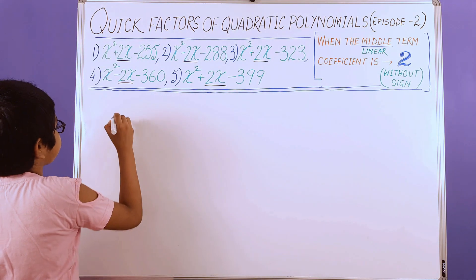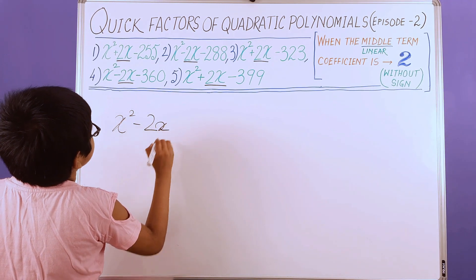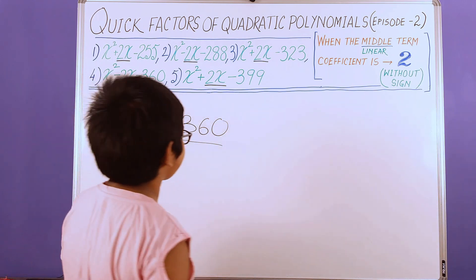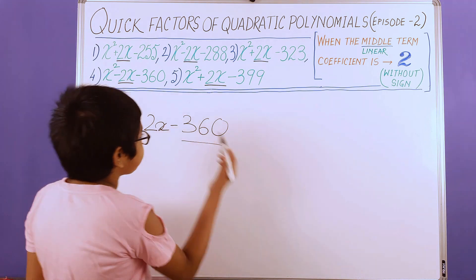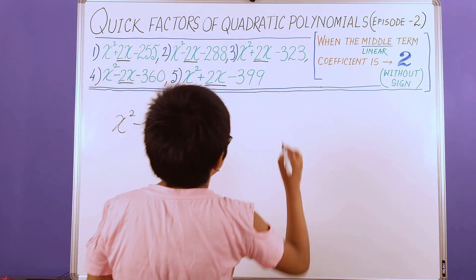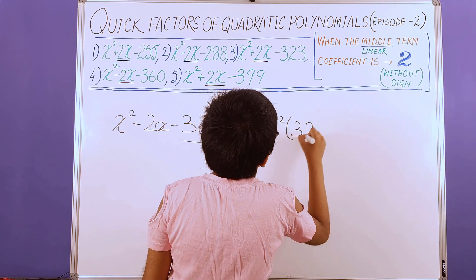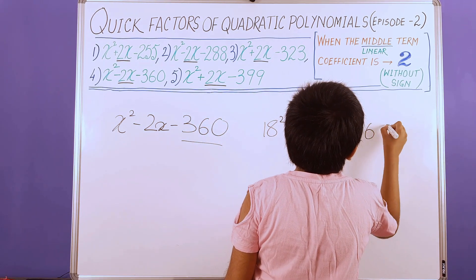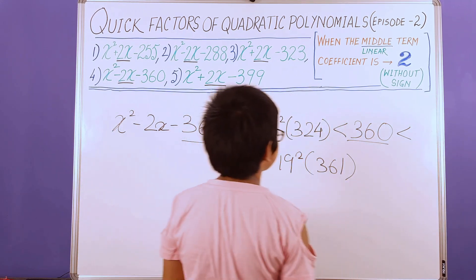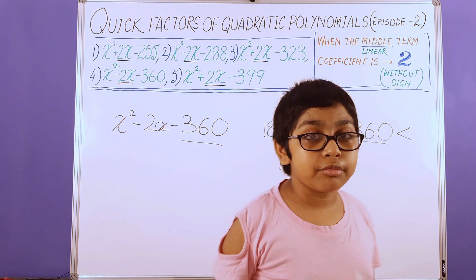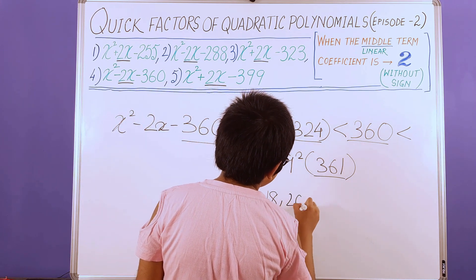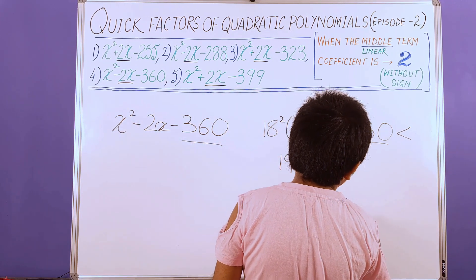We move on to our fourth polynomial: x squared minus 2x minus 368. We need to focus on the constant term and the sign in front of the middle or linear term. We need to locate 368 between two consecutive perfect square numbers: 18 squared is 324, less than 368, less than 19 squared, which is 361. We add 2 to 18 to get the pair 18 and 20, and we subtract 2 from 19 to get the pair 17 and 19.